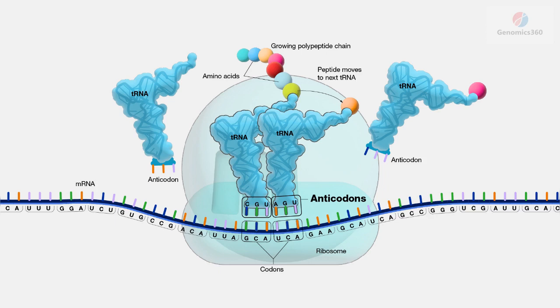For instance, a messenger RNA codon GCA matches with the transfer RNA with the anticodon CGU, which carries with it the amino acid called alanine. That alanine is then added to the growing protein chain.